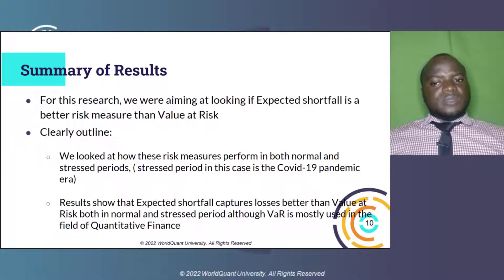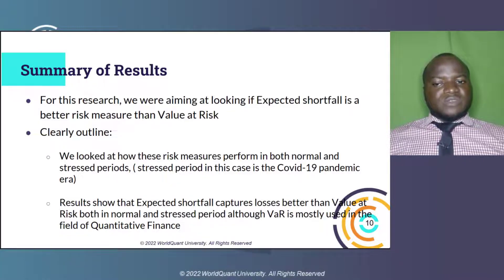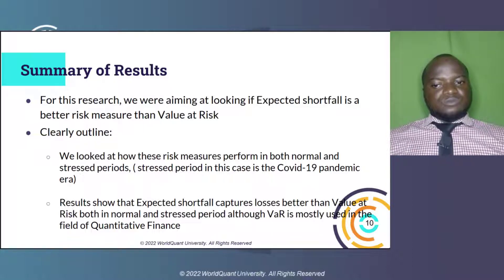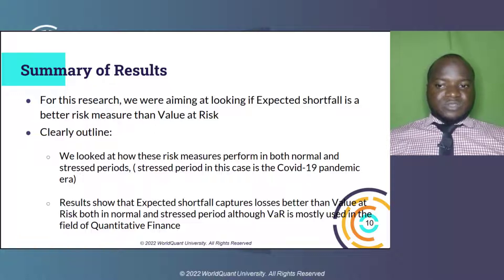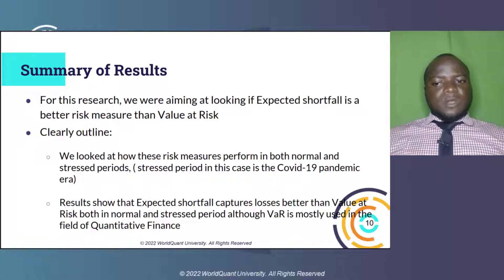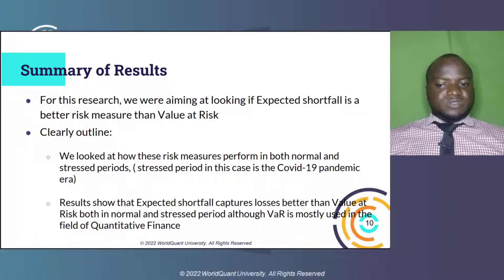While February to March 2020 was truly a stress period for the global economy, the number of backtesting exceptions observed for VaR is more than for ES over a 20-day backtesting window. Expected shortfall increased on account of huge volatilities, factoring in extreme shocks, while VaR could adapt only a little. In the course of this study, our primary objective was to determine whether value at risk or expected shortfall is a superior risk metric. We analyzed the performance of these risk measures during both normal and stress periods, with the stress period being the era of the COVID-19 pandemic. The results indicate that expected shortfall captures losses better than value at risk during both normal and stress periods, despite the fact that VaR is more commonly used in quantitative finance.